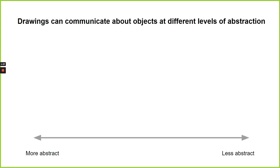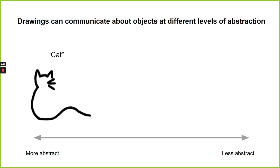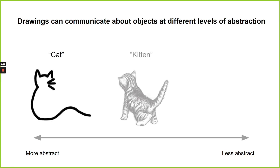Nowhere is this ability to think of objects at different levels of abstraction more clear than when we study drawings. Specifically, people can use drawings to communicate information about objects at different levels of specificity, from highly abstract representations evocative of catness, to a drawing of a kitten, to a highly realistic painting of a specific cat named Charlie.